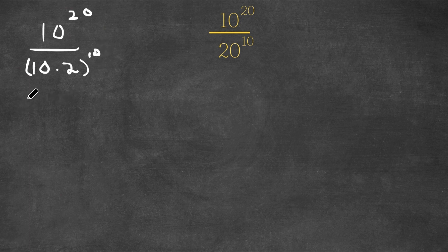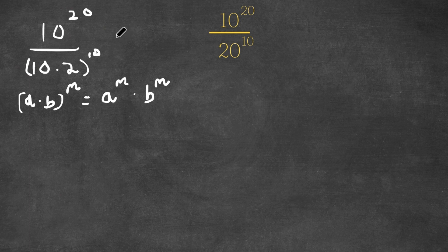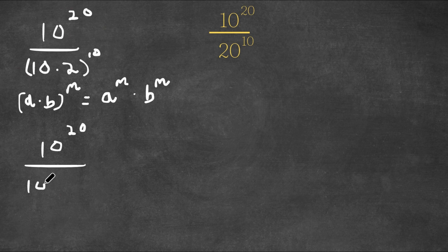Now if I have something in the form (a times b) to the power of m, this is equal to a to the power of m times b to the power of m. So 10 to the power of 20 over (10 times 2) to the power of 10 would equal 10 to the power of 20 over 10 to the power of 10 times 2 to the power of 10.